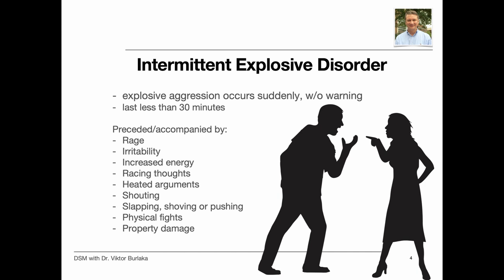Explosive eruptions occur suddenly, with little or no warning, and usually last less than 30 minutes. These episodes may occur frequently or be separated by weeks or months of non-aggression. Less severe verbal outbursts may occur in between episodes of physical aggression. You may be irritable, impulsive, aggressive, or chronically angry most of the time. Aggressive episodes may be preceded or accompanied by rage, irritability, increased energy, racing thoughts, tingling, tremors, palpitations, and chest tightness.